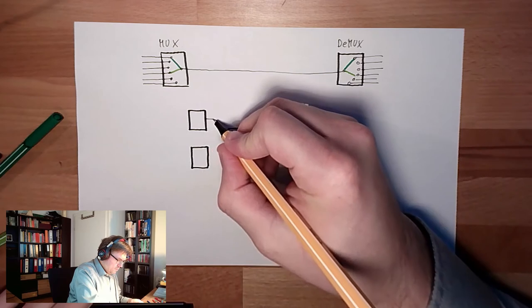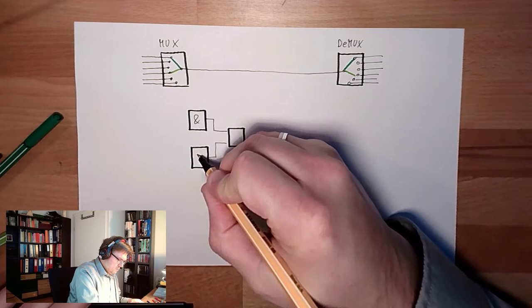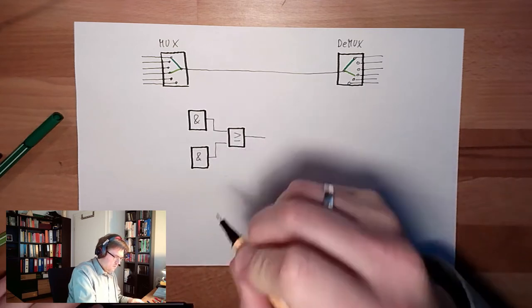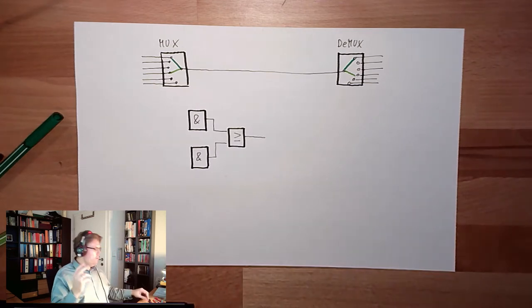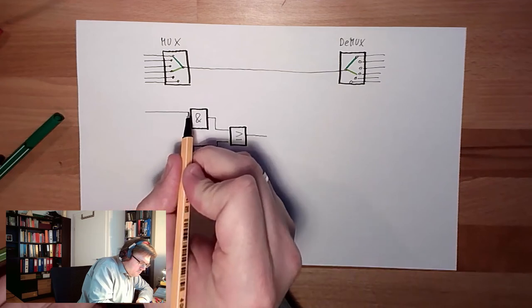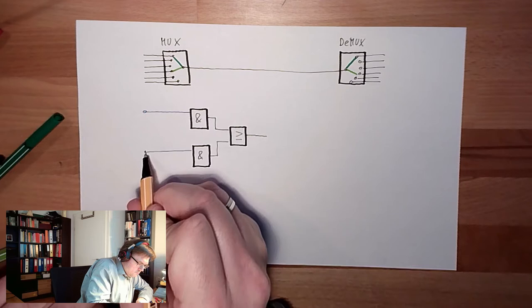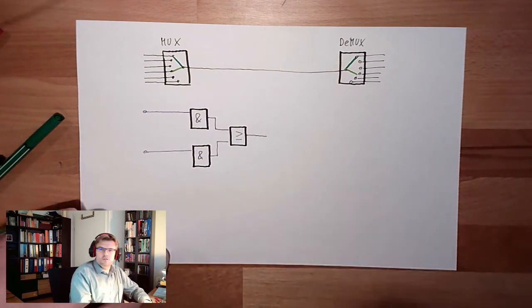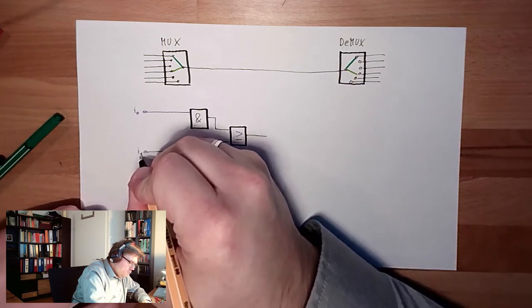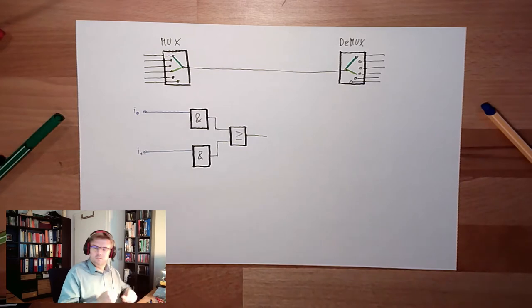So here are the outputs, these are ands. I have two signals, two input signals, which are here. So this is the input zero, input one, and I have one selection input, selection zero.